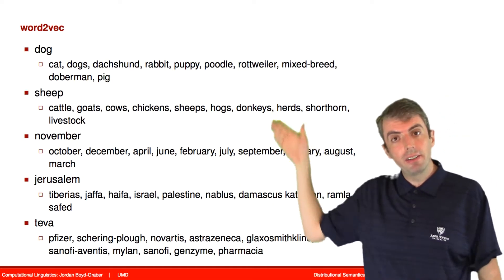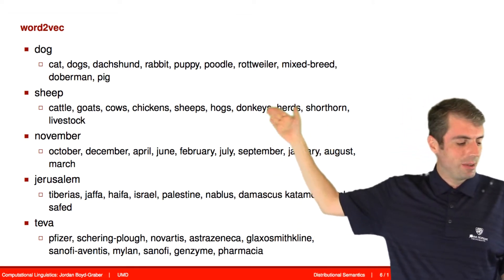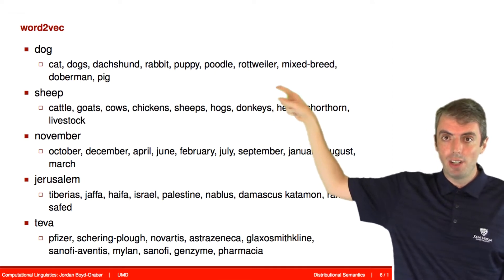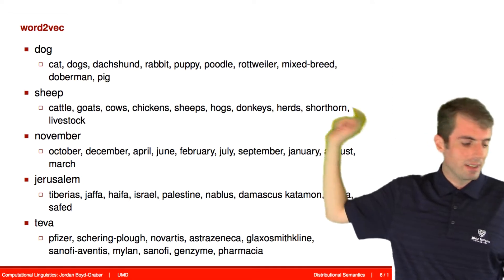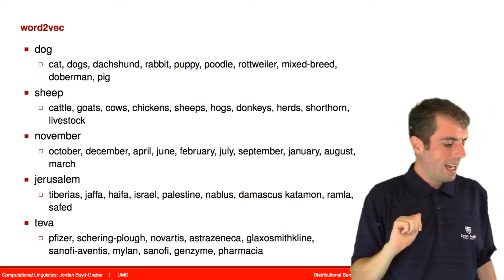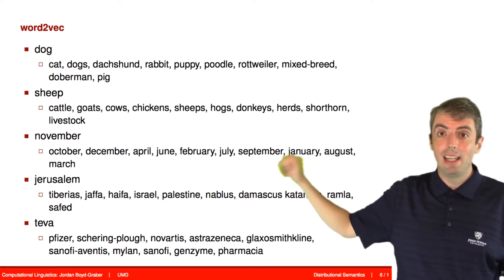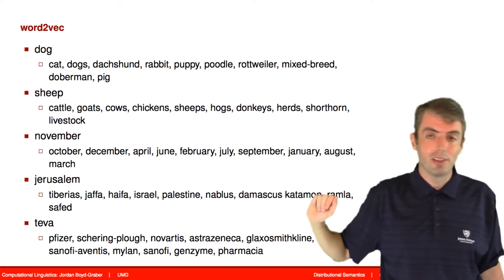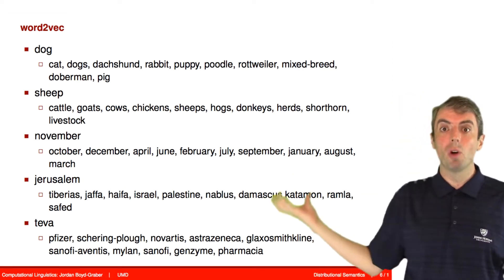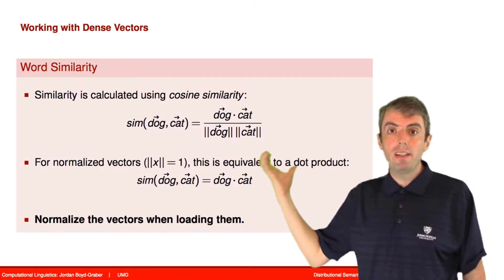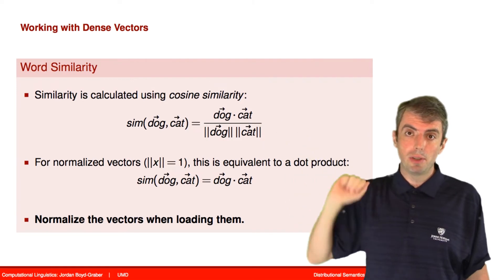The nice thing about the vectors you get out is that you get similarities between relevant things. If you look at the nearest neighbors of 'dog,' you'll see things like cat, dogs, and dachshund. If you look at proper names like Teva, you get other pharmaceutical-related terms. So it's not just capturing common sense knowledge — it's also capturing world knowledge. From these representations, you can do a lot of neat things, such as computing similarity between terms.